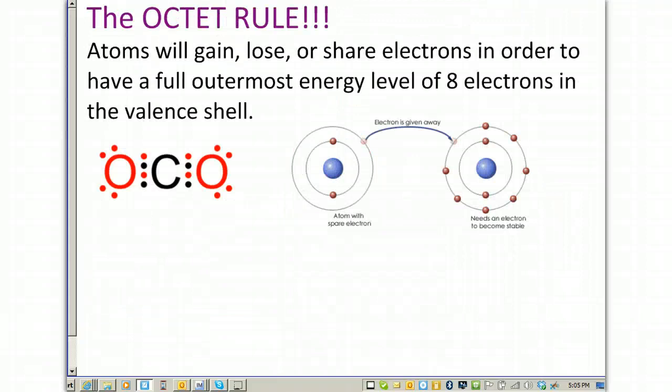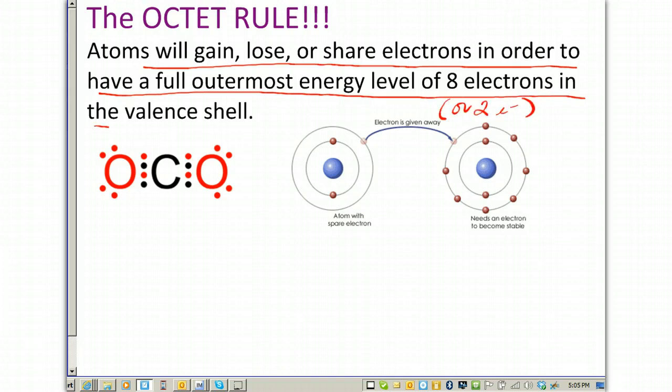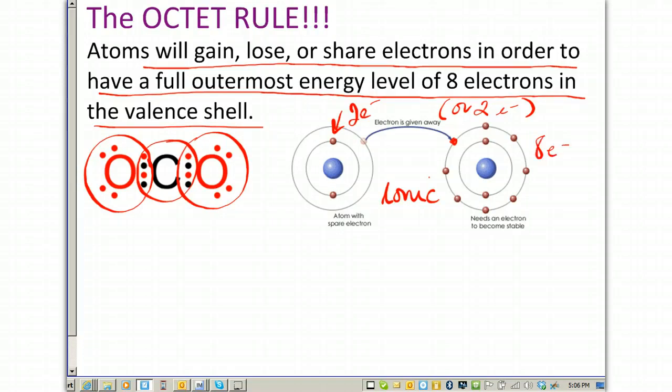The octet rule states that atoms will gain, lose, or share electrons in order to have a full outermost energy level of eight electrons or two, depending on the scenario, in the valence shell. So, here's an example where carbon is sharing electrons with oxygen, and notice it has eight surrounding it. Where the oxygen shares with the carbon as well, and notice that gives that oxygen eight, as well as the other oxygen. On the right, this is an example of ionic, where they're being transferred, leaving this with a duet of electrons for stability, and the element on the right will have the octet of electrons for stability.